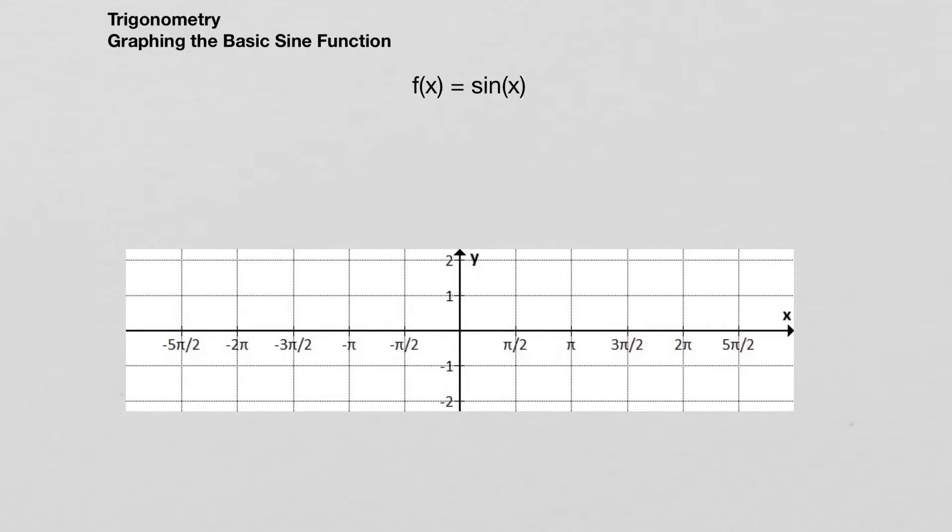My five key points are zero, pi over two, pi, three pi over two, and two pi.